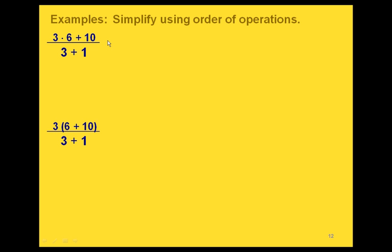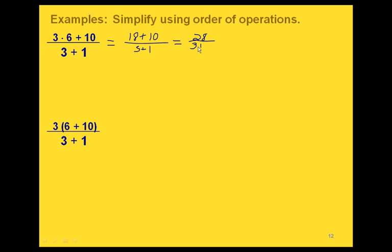Now let's look at two examples with a fraction bar, which is another type of grouping symbol. With a fraction bar, you simplify everything on the top and everything on the bottom before doing the division. In the first example, we work on the numerator first: the multiplication 3 times 6 equals 18, then 18 plus 10 equals 28. Then we simplify the denominator: 3 plus 1 equals 4. Finally, 28 divided by 4 equals 7.